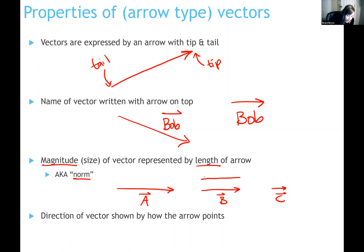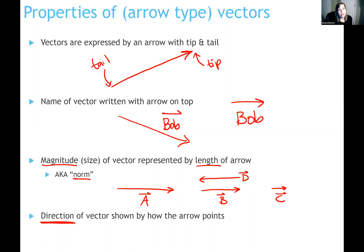Let me compare a couple of vectors: vector a, vector b, and vector c. Each has a different length, which means their norms are different. Vector d and vector b have the same length - they're pointing in different directions, but they have the same physical length, which means they have the same norm or magnitude. The direction of the vector is symbolized by how the arrow is pointing. Vector e is pointing up and to the right, vector f is pointing down and to the right. All vectors have a norm and a direction indicated by how the tip is pointing.